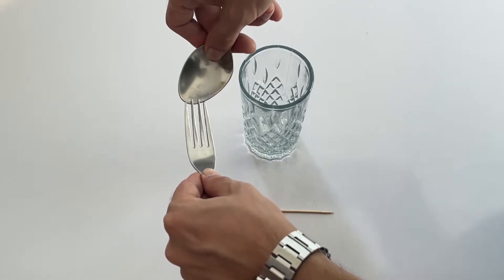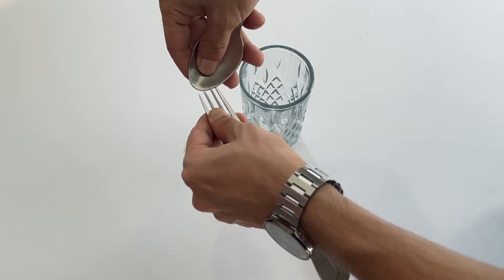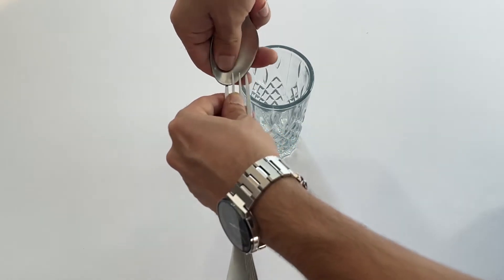We start the experiment by pushing the fork and spoon together so the bowl of the spoon is under the two center tines but over the outer two tines of the fork.